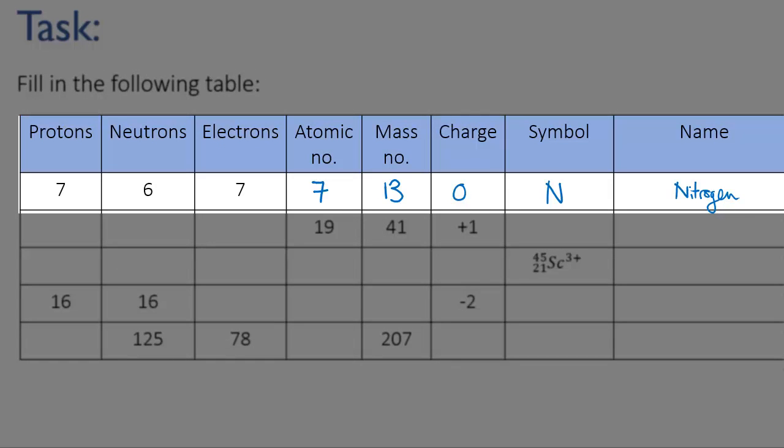To complete the symbol, we put the atomic number at the bottom left and the mass number at the top left. And because this is a neutral atom, we don't need to write a charge. I'll leave the rest for you to finish off.